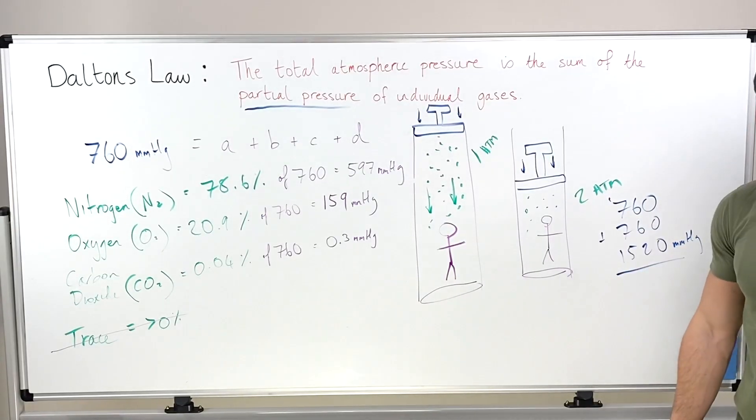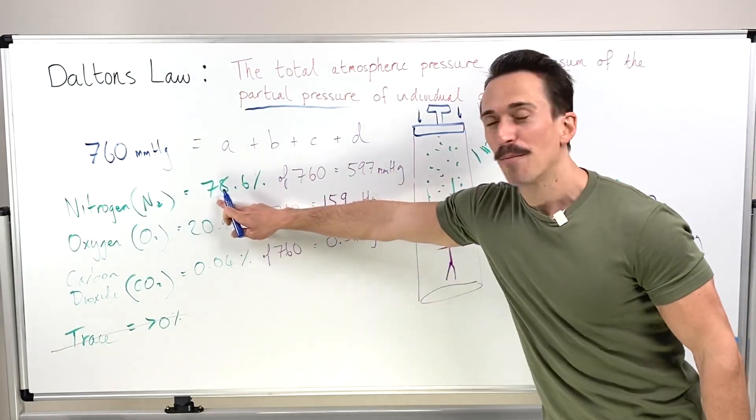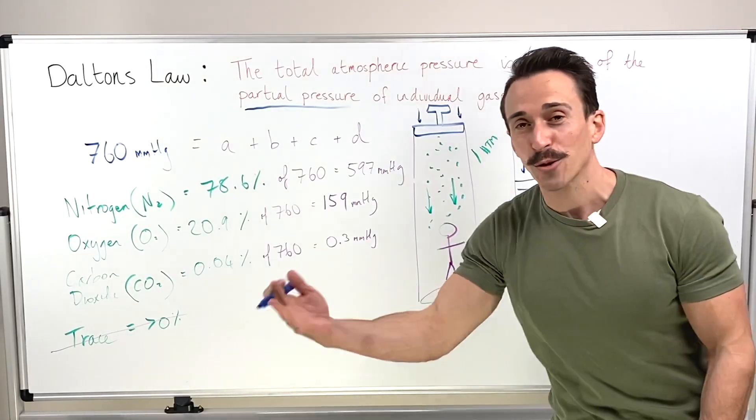So 760 plus 760 is 1520 millimeters of mercury worth of pressure. All we need to do to find out how much nitrogen, oxygen, carbon dioxide and so forth is within this is 78.6% of 1520 will give you the partial pressure of nitrogen.